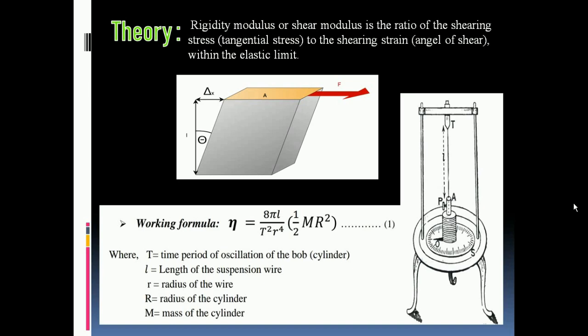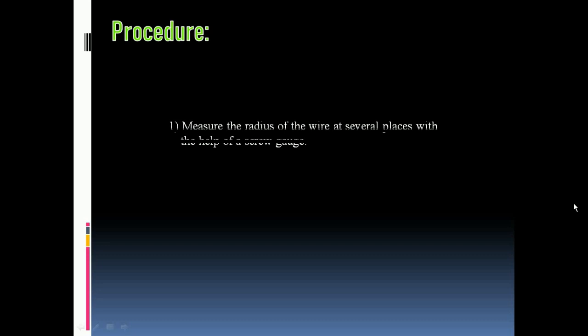So let's start the procedure. First, let us start with the screw gauge instrument. Screw gauge is an instrument which is used to measure very small distances. Here we are using the screw gauge for the measurement of radius of the wire. Here is the demonstration.